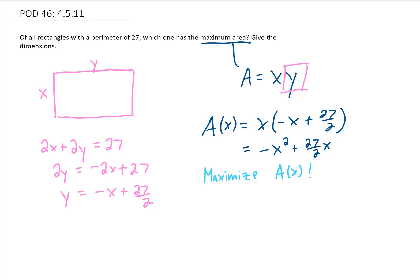The way that we maximize any function is we take its first derivative and find its critical points. The first derivative of our function is negative 2x plus 27 halves. That first derivative exists everywhere. So the question we want to ask is where is this first derivative equal to 0? And solving this is going to give us our critical point.